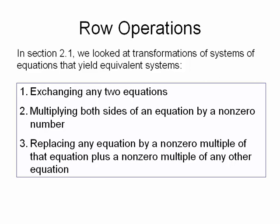In section 2.1, we looked at transformations of systems of equations that yield equivalent systems. We had three steps: exchanging any two equations, multiplying both sides of an equation by a non-zero number, and replacing any equation by a non-zero multiple of that equation plus a non-zero multiple of any other.